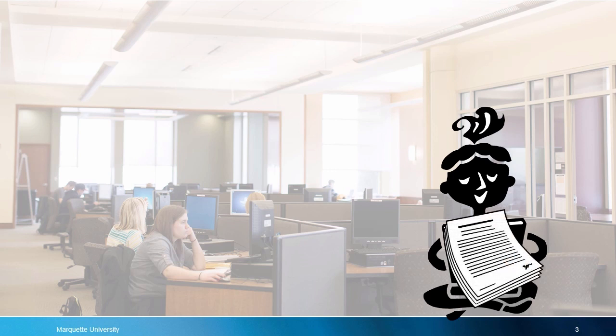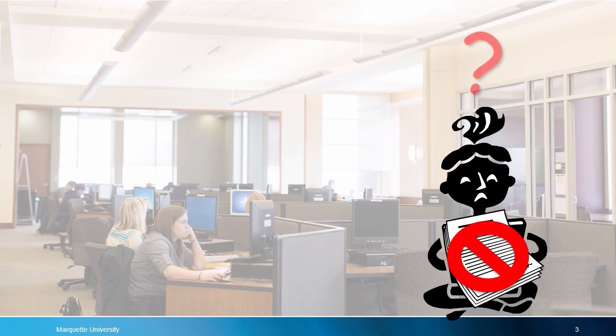Some articles you can download or email right away, but for a couple you can only see an abstract or summary. There is no full text. Why is this happening? This short video is about that why.